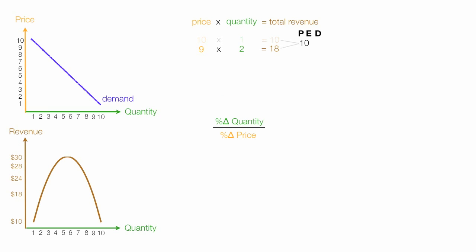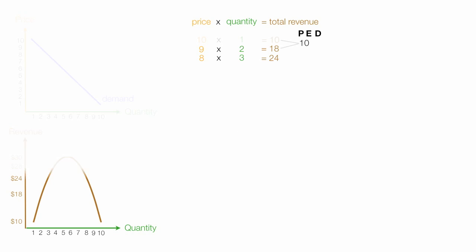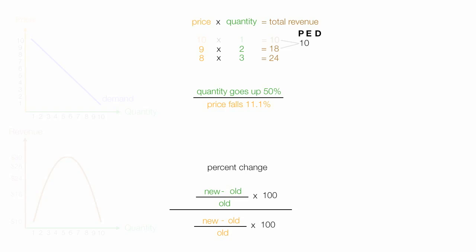Imagine price falls again from $9 to $8. So price falls from $9 to $8 and it falls 11.1%. And quantity goes from 2 to 3, which means quantity goes up 50%. And these are the formulas I'm going to use right there. I'll leave that up so you can follow along.